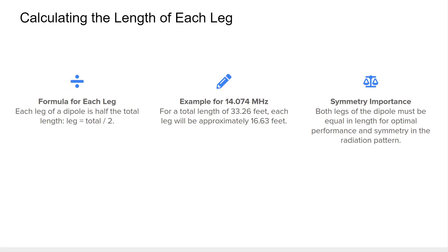To calculate the length of each leg of the dipole, simply divide the total length by two. This is important because the dipole consists of two equal-length elements, each responsible for radiating half of the signal. For instance, using a resonant frequency of 14.074 MHz (20-meter FT8), the total dipole length was 33.26 feet. Dividing this by two, we find that each leg should be approximately 16.63 feet. Symmetry between the legs ensures the antenna performs correctly and has a balanced radiation pattern.